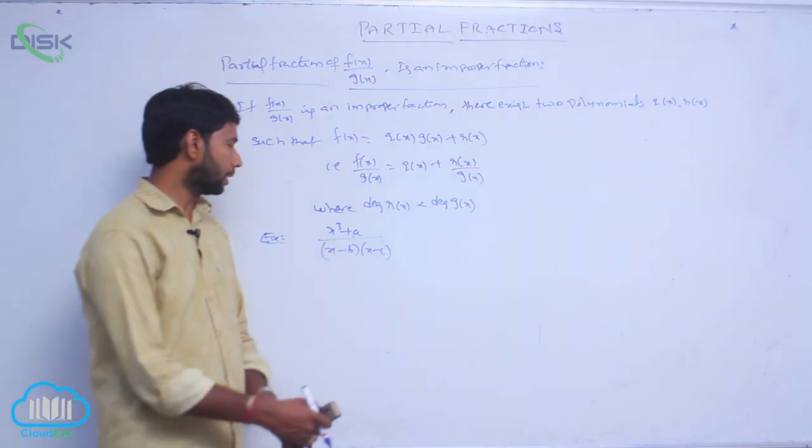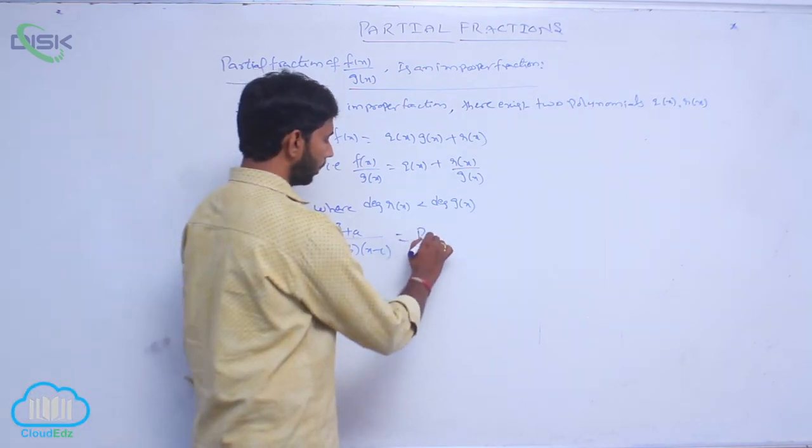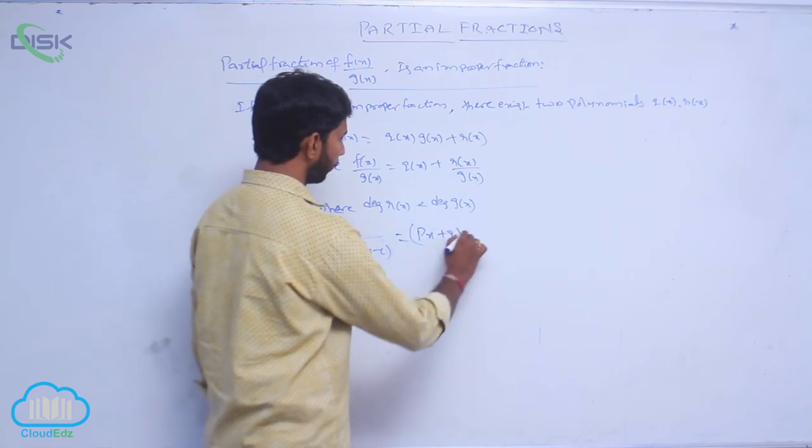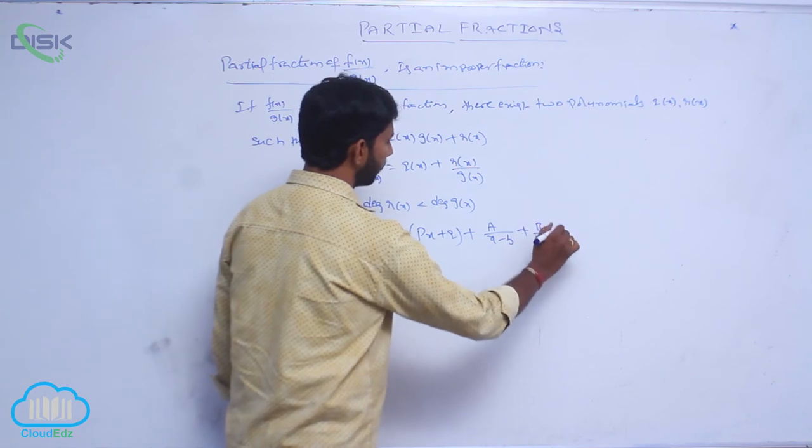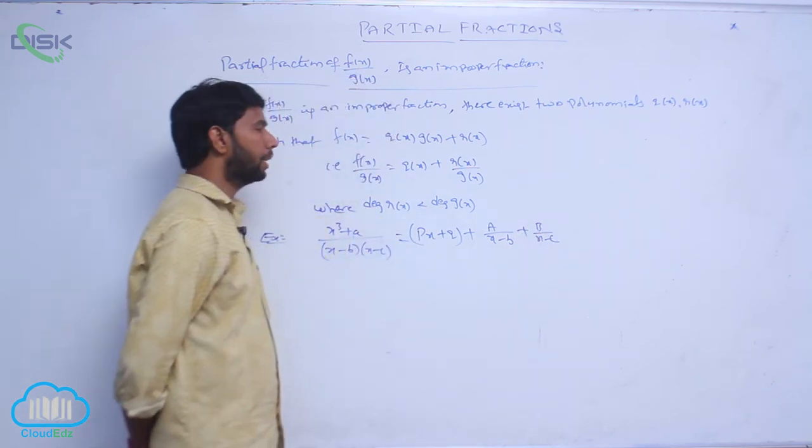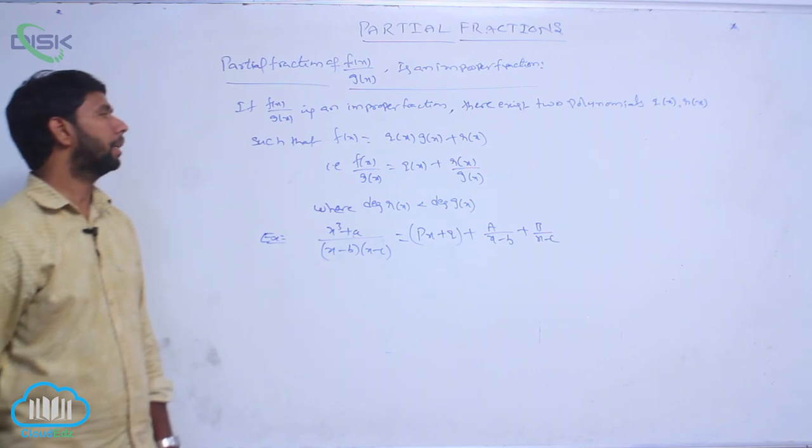It can be written as z equal to p x plus q of a by x minus b plus b by x minus c.